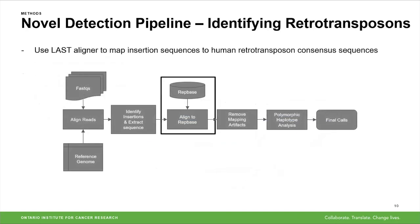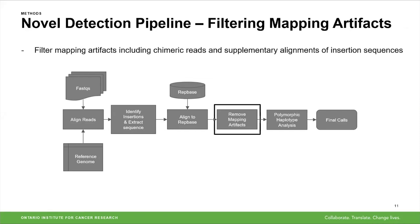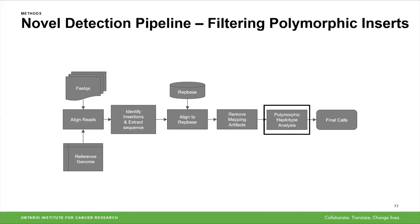Once we have extracted insertion sequences, we pass these to the LAST aligner to align them to a set of human retrotransposon consensus sequences, allowing us to annotate inserts to the retrotransposon repeat family that they map to best. We then filter inserts to identify mapping artifacts, which includes removing insertions from chimeric reads as well as inserts from supplementary alignments of other insertion sequences. At this stage, we're left with a fairly high quality set of insertions annotated to retrotransposon repeat families.